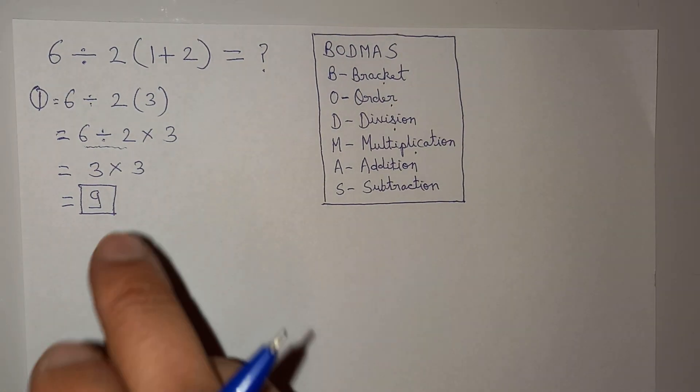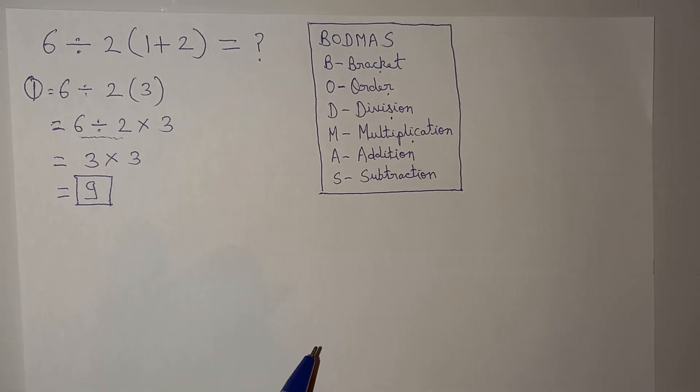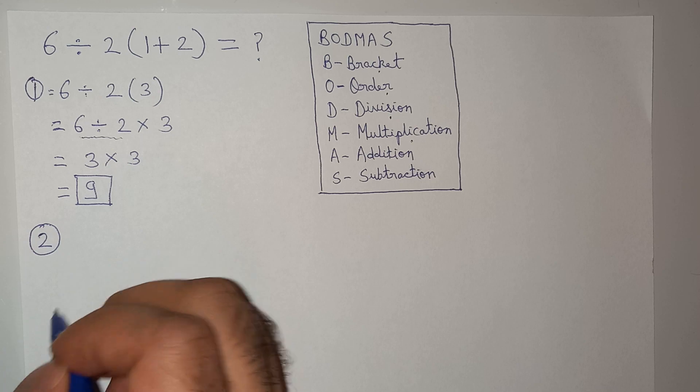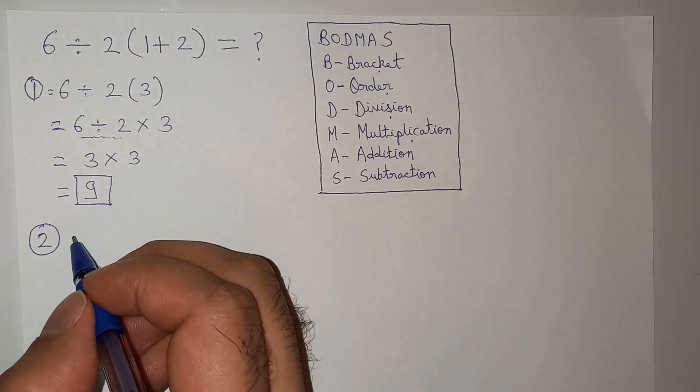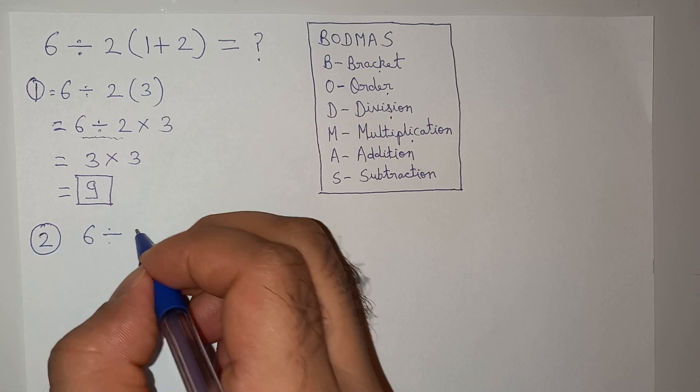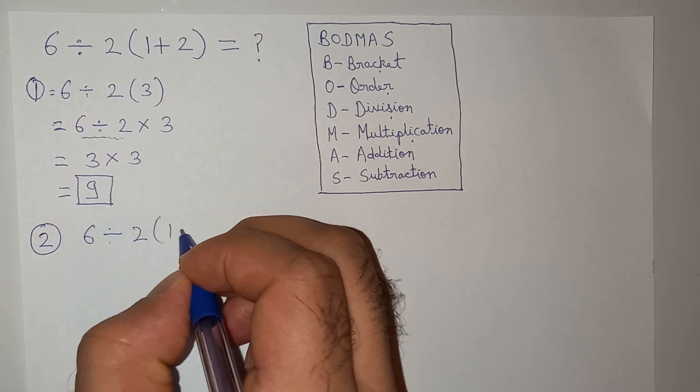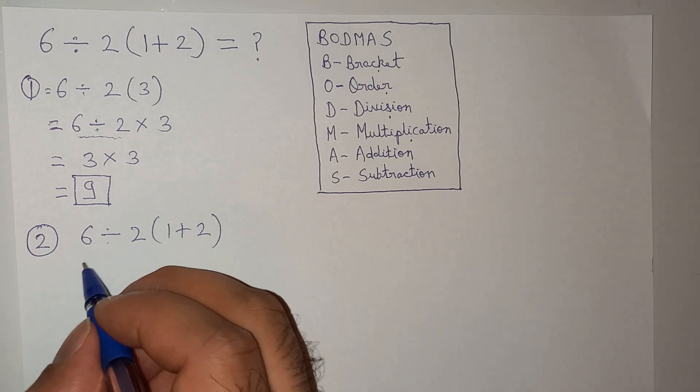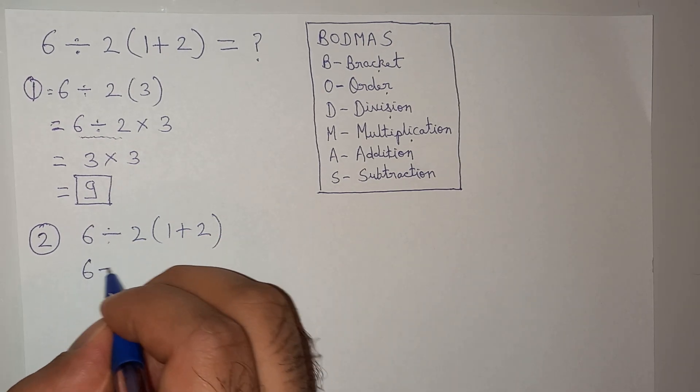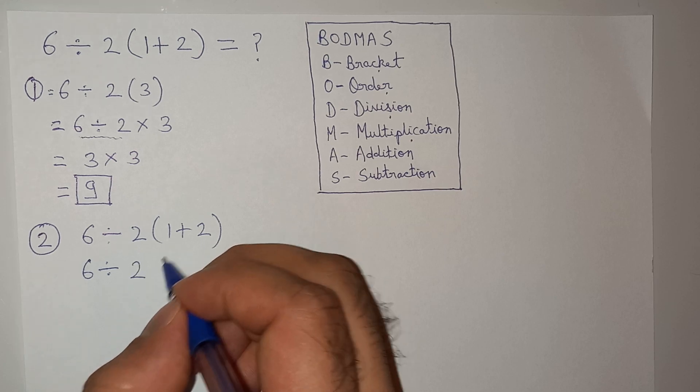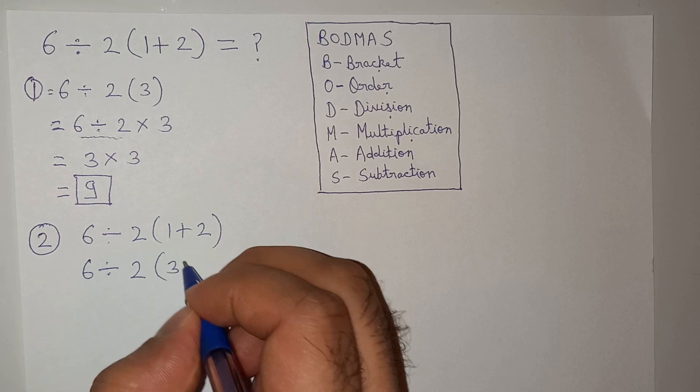Then what is the controversy about this question? The thing is, if we solve through the second method—let me write the question here again: 6 ÷ 2(1+2). This can be written as 6 ÷ 2, and the bracket 1 + 2 = 3.